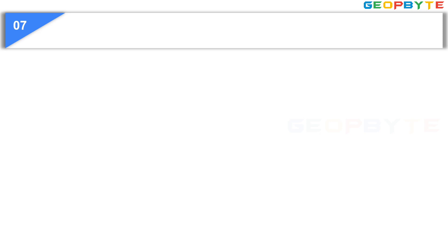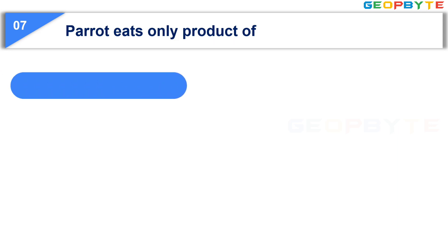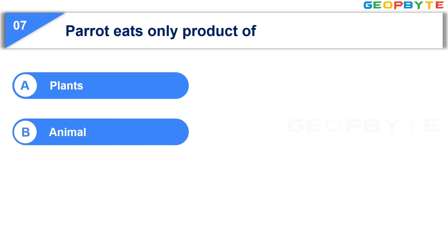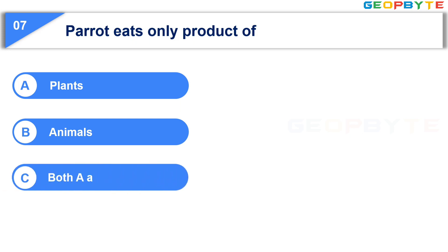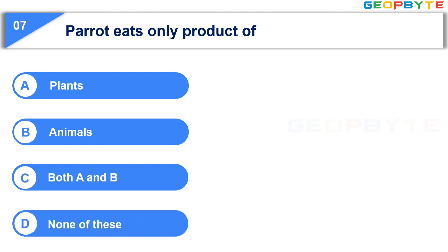Now, let us see the seventh question. Parrot is only product of. Option A, Plants. Option B, Animals. Option C, Both A and B. Option D, None of these. Your time starts now.